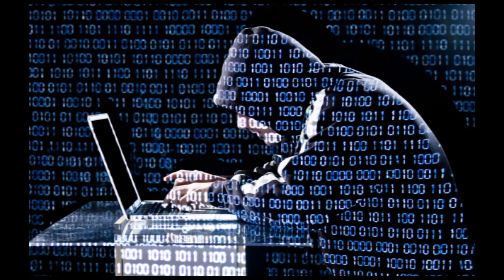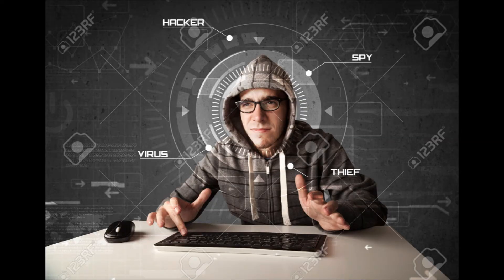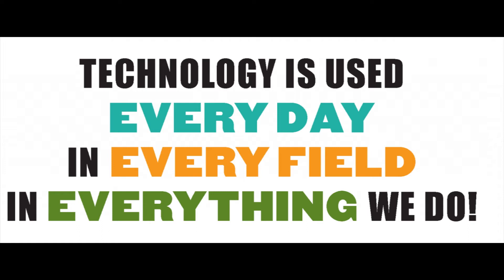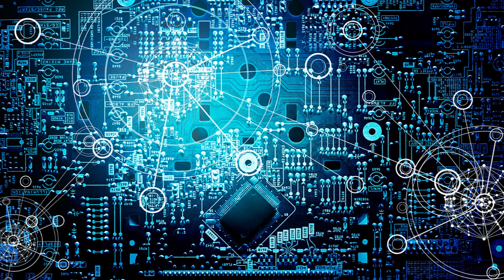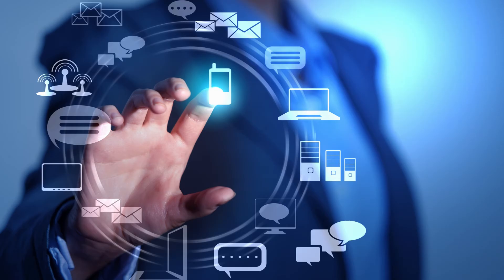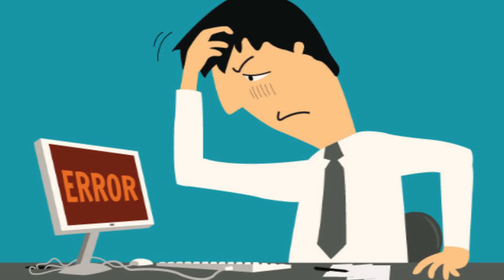Technology has influenced society in different ways. In many societies, technology has helped develop the economy, including today's global economy, and has allowed the growth of a free social class in terms of time and work. Many technological processes release undesirable products known as contamination and drain natural resources to the detriment of earth and nature.